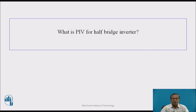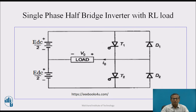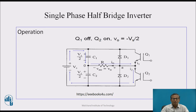What is the PIV for the half bridge inverter? When Q1 conducts, Q2 is in a non-conducting state. The drop across Q1 is 1 to 1.5 V (ideally 0), but the drop across Q2 is Vs. This means for the single-phase half bridge inverter, the drop across the non-conducting device equals Vs.